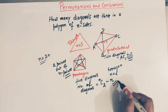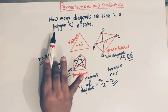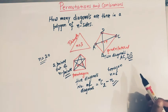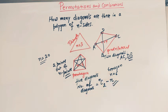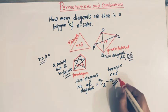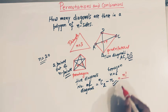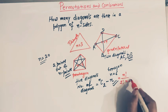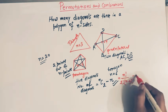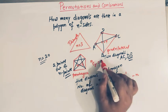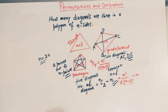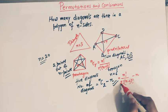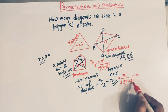So the number of diagonals is nC2 minus n. We use nC2 because to obtain a diagonal we must select two points out of n points, and the number of ways to select two points out of n is nC2. Now nC2 can be written as n factorial divided by 2 factorial times (n minus 2) factorial, minus n.